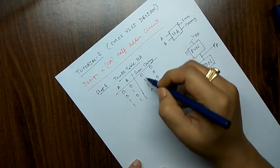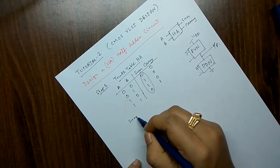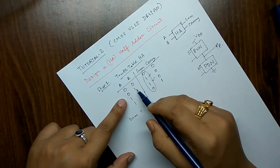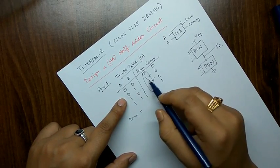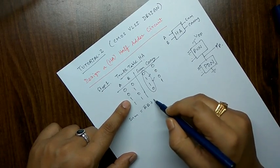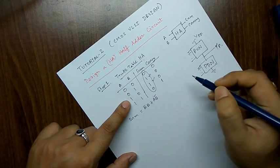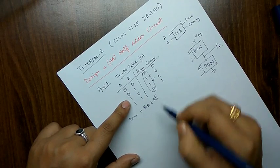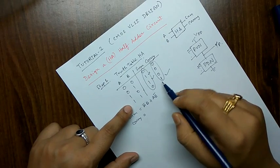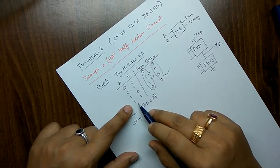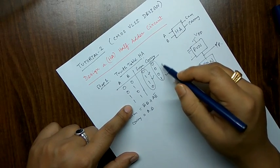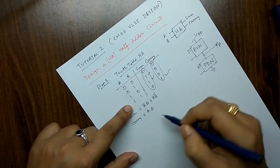From the truth table we must write down the sum expression first. We look at where ones appear: in case 2 where A is 0 and B is 1, sum is 1, giving A-bar·B; and in the case where A is 1 and B is 0, giving A·B-bar. So sum = A-bar·B + A·B-bar. For carry, there is only one case where both A and B are high, so carry = A·B.